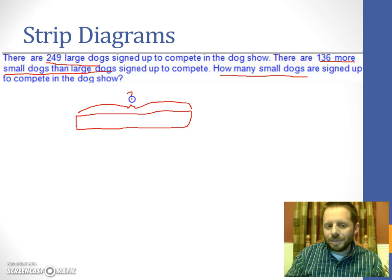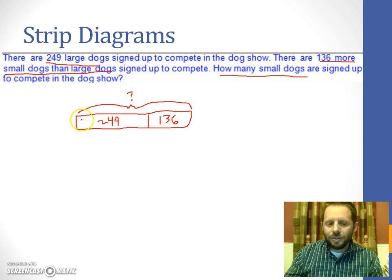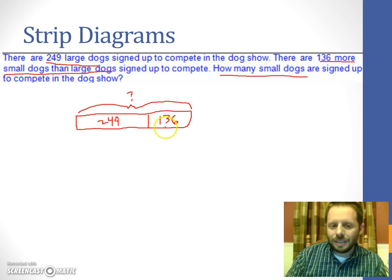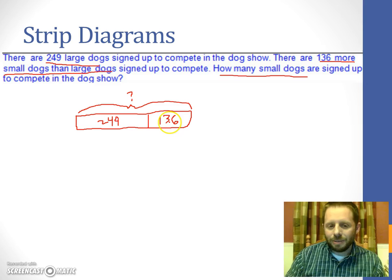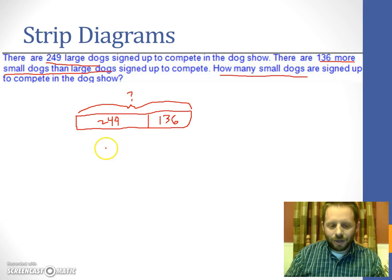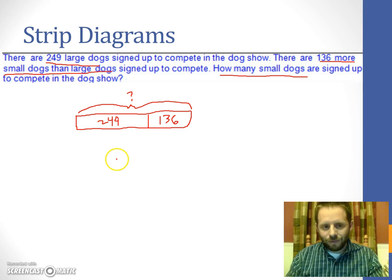Now, we don't know how many small dogs there are. That's what we're trying to find. But we do know that part of this number is 249. That's our 249 large dogs. And the other part is the 136 because there is 136 more small dogs than there were large dogs. So you have the original 249 that represent the large, and then we're going to add another 136 because there's that many more small. So together, they make the total, which is what we're trying to find. So this helps you to visualize, this must be an addition problem. I'm adding the two pieces to get the whole.